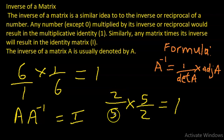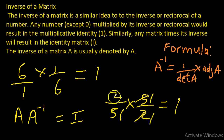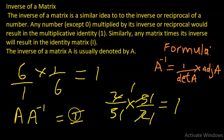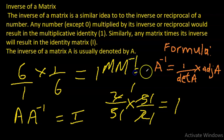Likewise, two over five times its reciprocal or inverse gives you one. In the same way in matrix theory, if you multiply any matrix by its inverse — represented by a superscript minus one — the result is the identity matrix, the equivalent of one in number theory. So matrix M times its inverse M⁻¹ gives you I, the identity matrix.